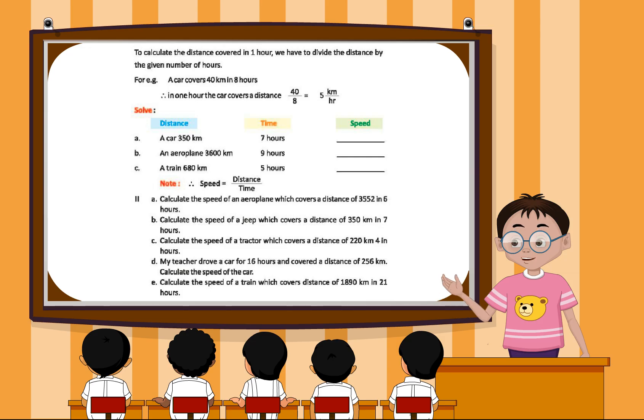Speed. To calculate the distance covered in 1 hour, we have to divide the distance by the given number of hours. For example, a car covers 40 km in 8 hours. Therefore, in 1 hour, the car covers a distance of 40 divided by 8, which equals 5 km per hour.